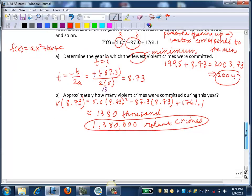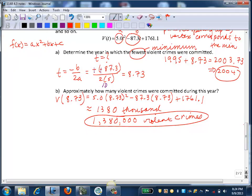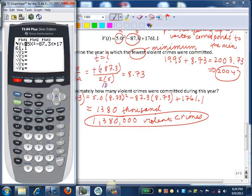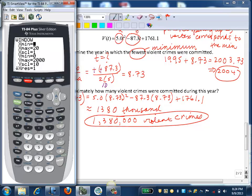So now, if we look on our calculator, we can check this, verify, and visualize this. So here, if we enter our function, 5x squared minus 87.3x plus 1761.1. Now, as far as my viewing window, in this case, my x value, my t value is time. It's years past 1995. So we're going to start with the x value of zero.